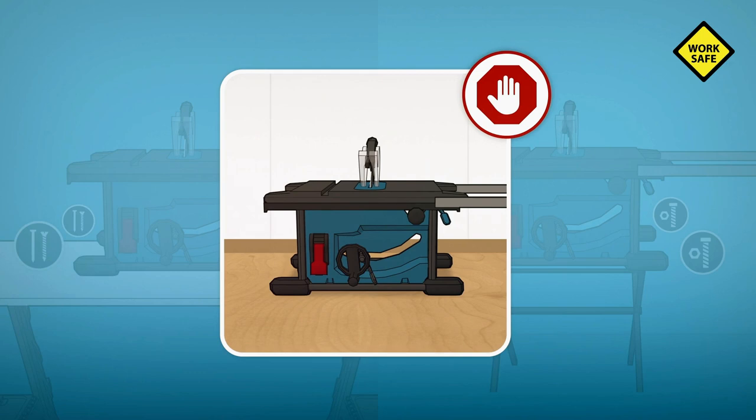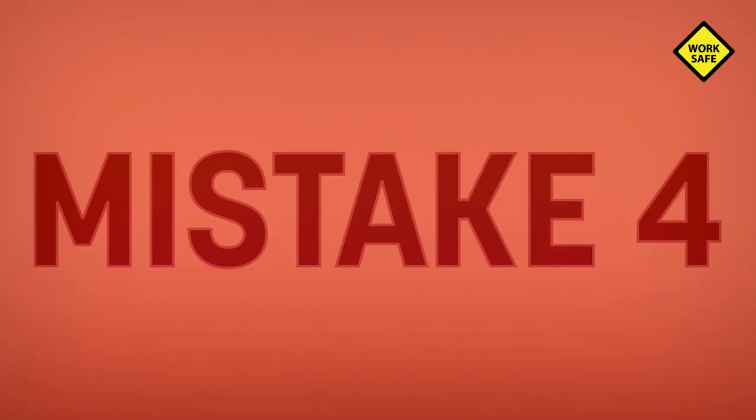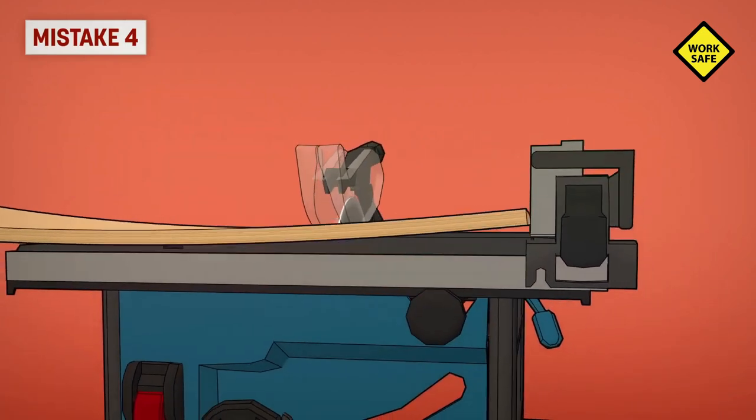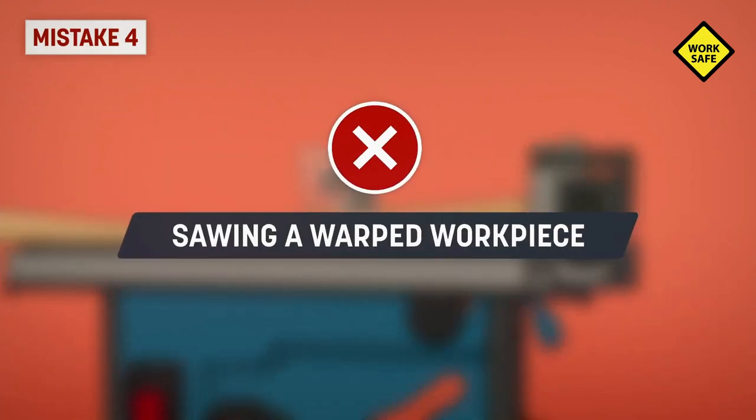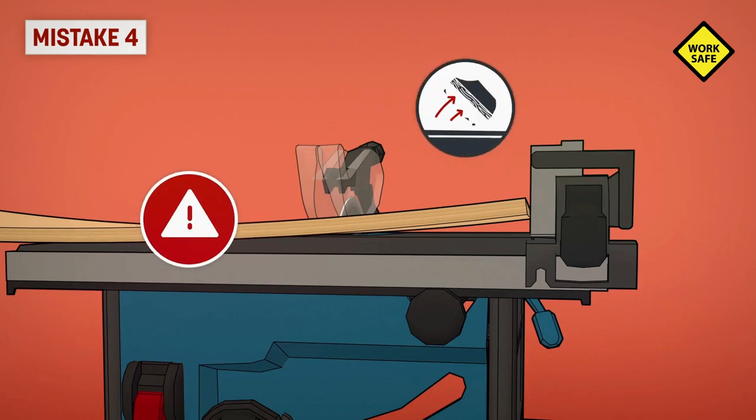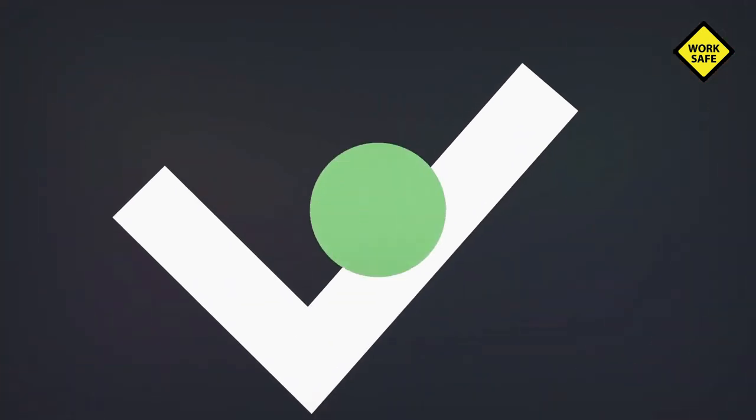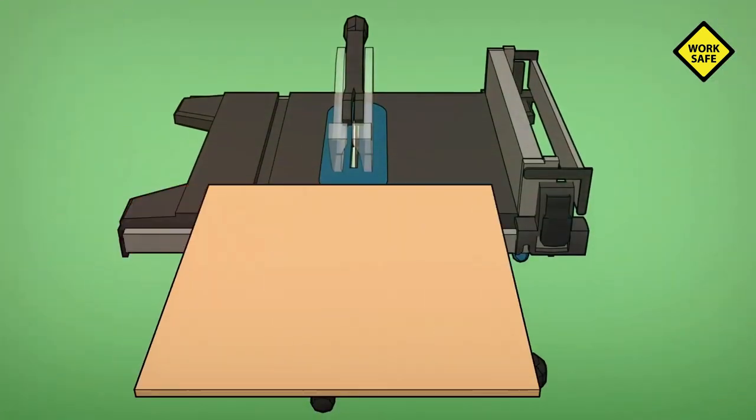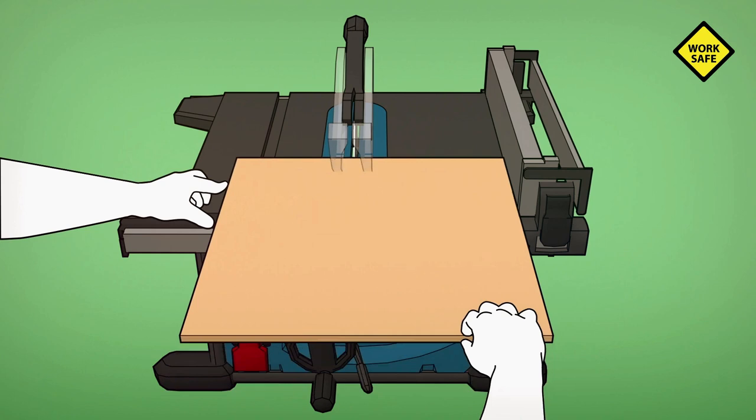Mistake four: sawing a warped workpiece. Never make a rip cut on a workpiece that's warped or a workpiece that doesn't have a straight edge. Before cutting, make sure that one side of the workpiece is straight so that it can slide along the fence.